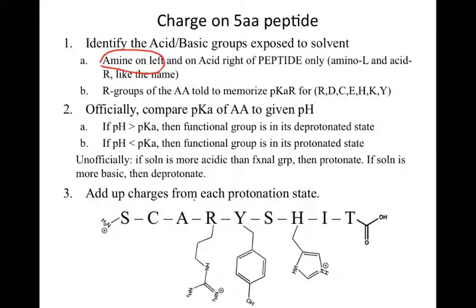We have a quick example down here. We start at the left with our amine. The amine has a pKa of about 9.1. If we're running at a pH of 7 — which must be specified in the problem — we have a functional group that is more basic than the pH, which means we need to be in the protonated state, because the solution is more acidic than our functional group. If we protonate the amine, the charge is positive.